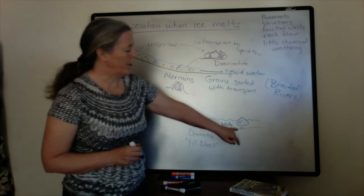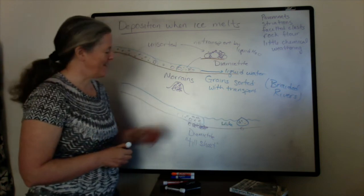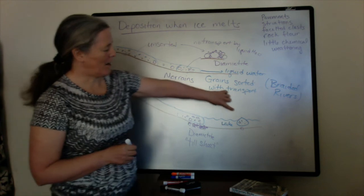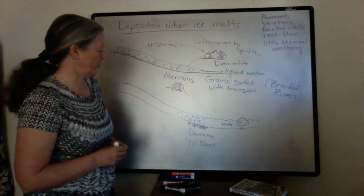And so large clasts are not transported out into the middle of the lake. And so when you see a cobble-sized clast that's sitting in the mudstones in the lake, ice-rafted debris is one of the possible interpretations for that.